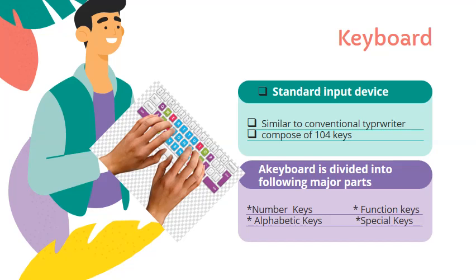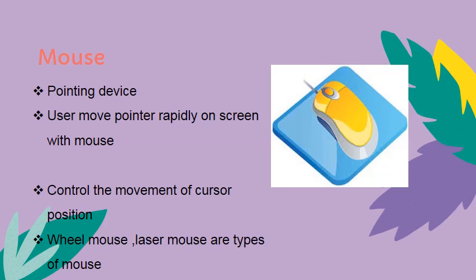Mouse is a pointing device used to select objects, text, and to draw pictures on a computer. A user can move the pointer rapidly on the screen with the help of a mouse. Mouse controls the movement of the cursor position. There is a variety of mouse available in the market, such as wheel mouse or laser mouse.